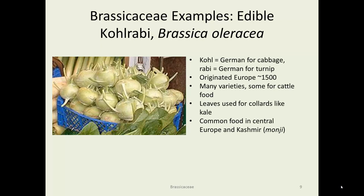Another edible example is kohlrabi, which is very popular in German cuisine. The name translates as: kohl is German for cabbage, and rabi is German for turnip — so they're looking at it as a great big turnip. It originated as much as four or five hundred years ago. There are a lot of different varieties; some are used for cattle and some for humans. The leaves are eaten like collards, and it's common in European and Kashmiri recipes.